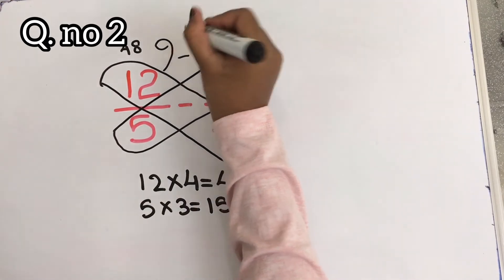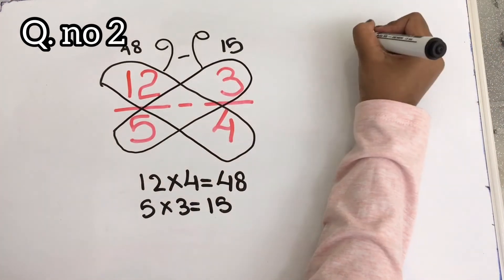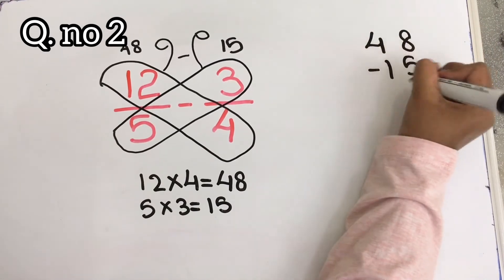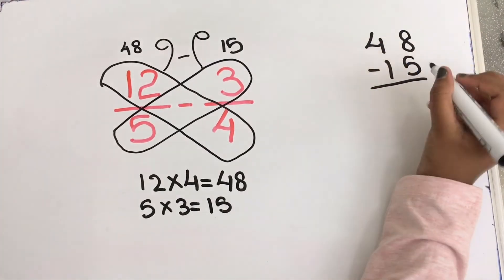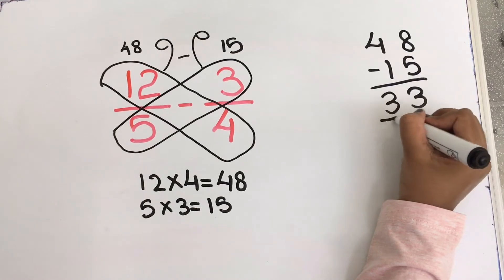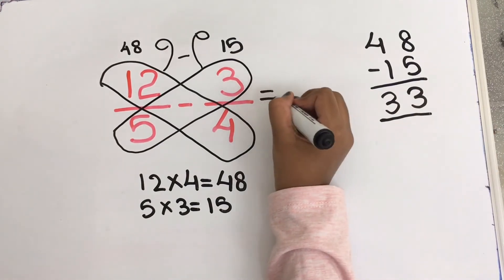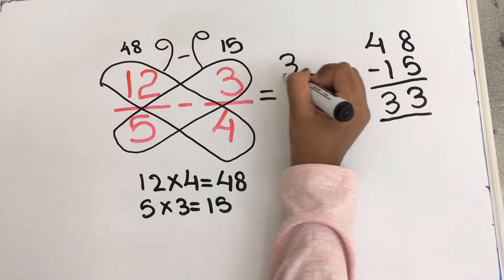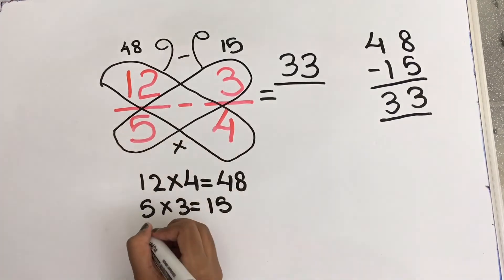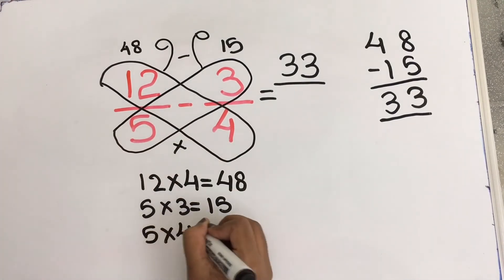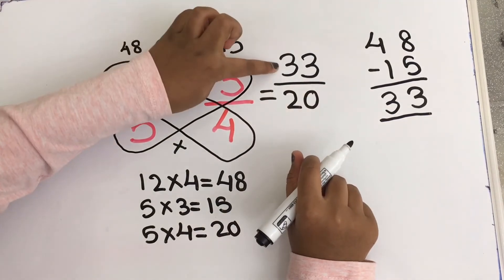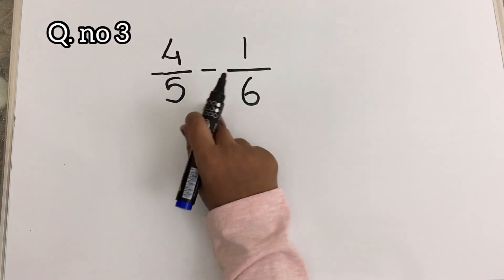Now I am going to subtract 48 minus 15. 8 minus 5 equals to 3, and 4 minus 1 equals to 3. The answer is 33. I am going to write 33 in the numerator place. Now I am going to multiply 5 into 4. 5 into 4 equals to 20, so I am going to write it as the denominator. The answer is 33 by 20. Now let's draw the butterfly for the next example.